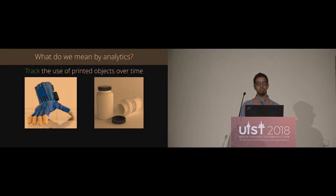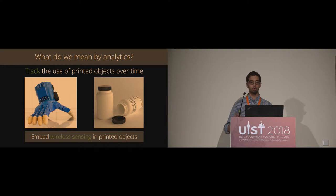And similarly, we can think of other everyday objects like plastic pill bottles. If we could detect when a user actually turns the cap to open the bottle, we could do things like send a reminder to make sure someone takes their medication or make sure that they haven't taken too much. So really, our goal here is to embed wireless sensing into these printed objects.